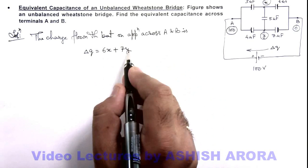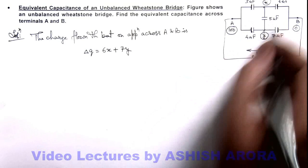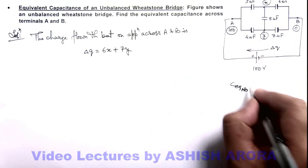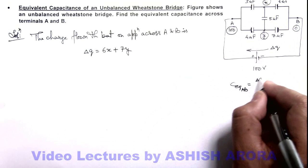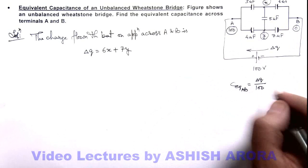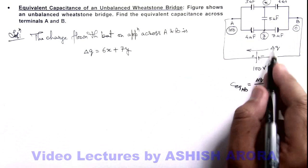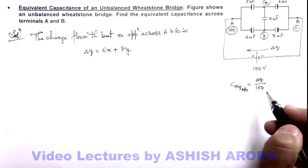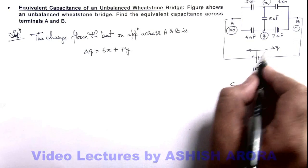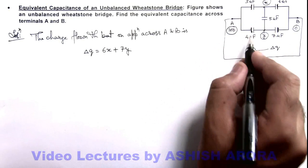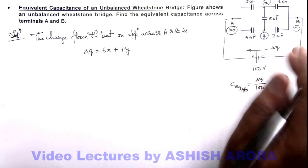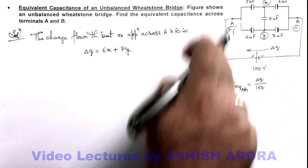So if we get the value of delta q, then this delta q will help us to calculate the equivalent capacitance because here we can write C equivalent across A and B is equal to delta q divided by hundred, that is q by v, the charge supplied by the battery divided by the battery potential difference. This delta q can also be calculated from the left hand side, the sum of the charges of 3 and 4 microfarad capacitor.